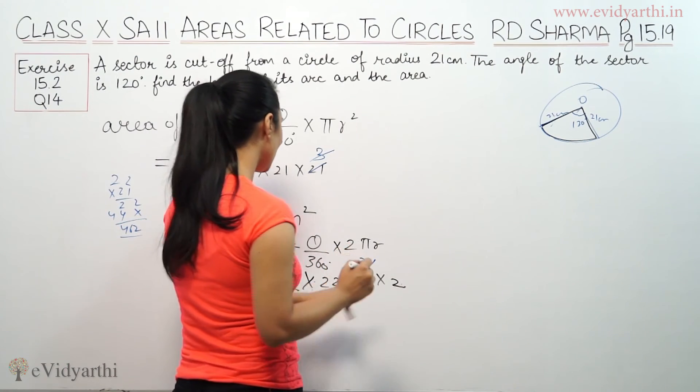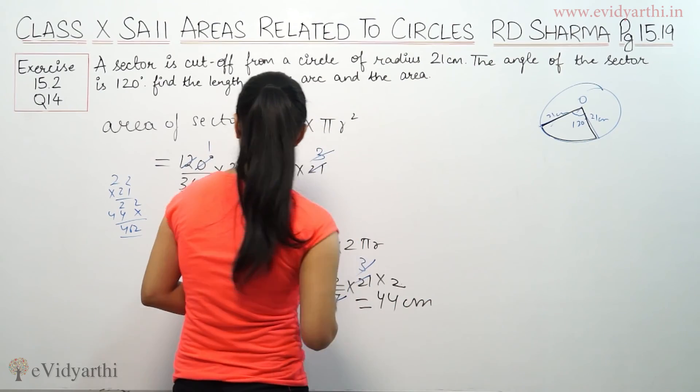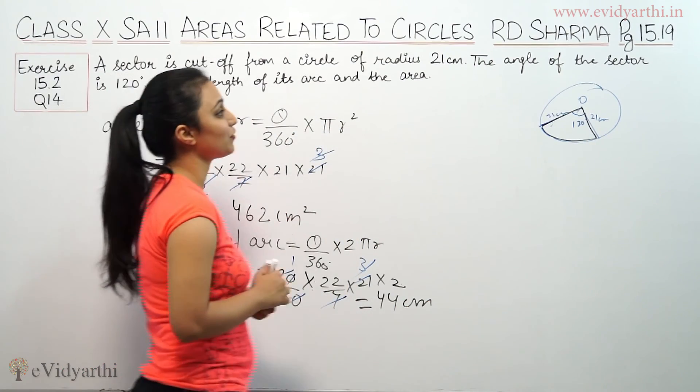This is 22 into 2, means 44. 44 centimeters. This is the length of arc, 44 centimeters.